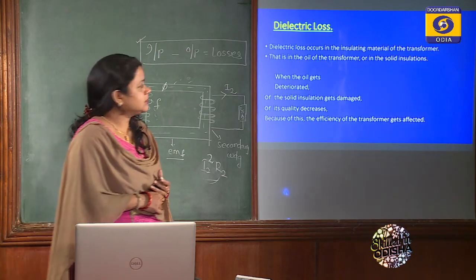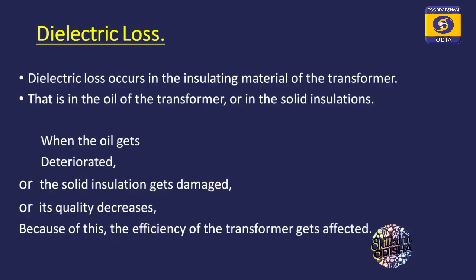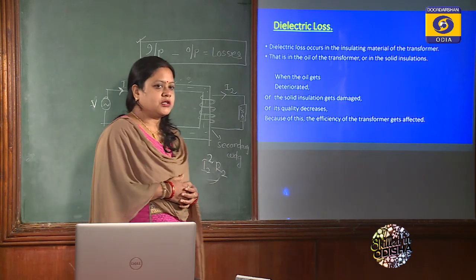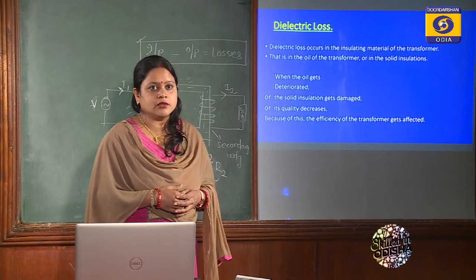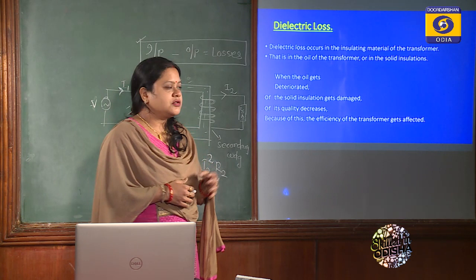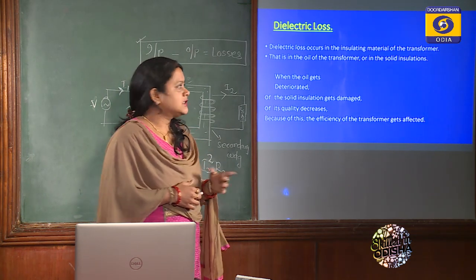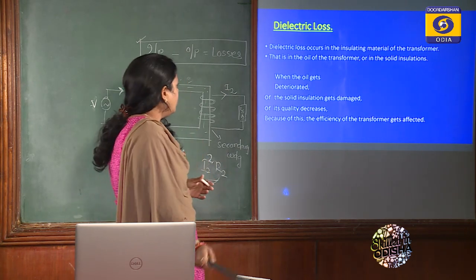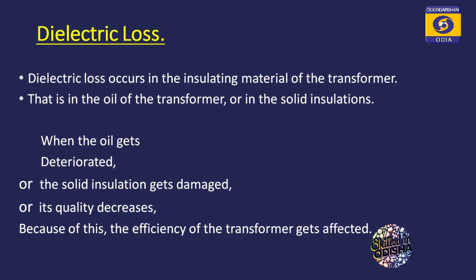The last loss is known as dielectric loss. Dielectric loss occurs in the insulating material of the transformer. The transformer uses oil insulation and solid insulation in the core. When the oil deteriorates or the solid insulation gets damaged or its quality decreases, the efficiency of the transformer gets affected.